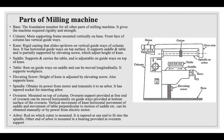The spindle obtains power from the motor and transmits it to the arbor; it has a tapered socket for inserting the arbor. The overarm is mounted on top of the column; the overarm support at its free end can be moved horizontally on guideways at the bottom surface of the overarm. Vertical movement of the knee, horizontal movement of the saddle, and movement of the table can all be obtained manually or by power from an electric motor. The arbor is the rod on which the cutter is mounted; it is tapered at one end to fit into the spindle, and the other end is mounted in a bearing in the overarm support.